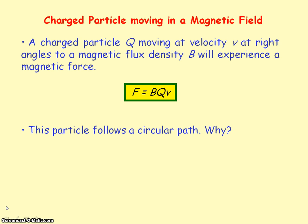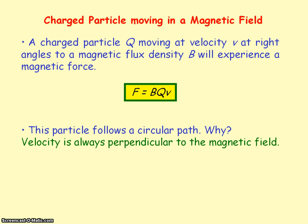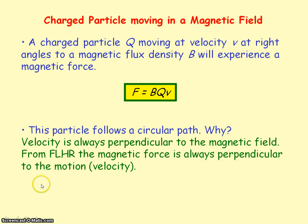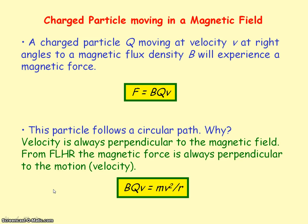The charged particle will follow a circular path. This is because if the velocity of the particle is always perpendicular to the magnetic field, then from Fleming's left hand rule the magnetic force will always be perpendicular to the velocity. The condition for circular motion is that the resultant force must always be perpendicular to the velocity. So the magnetic force equals the centripetal force: BqV = mv² / r, where m is the mass of the particle and r is the radius of the circular path.